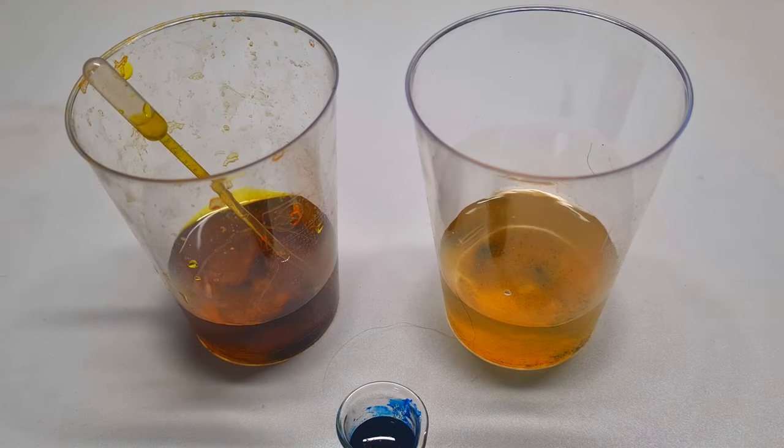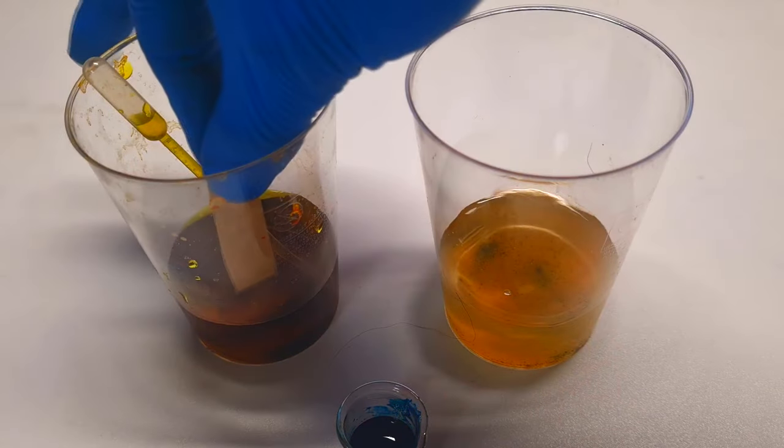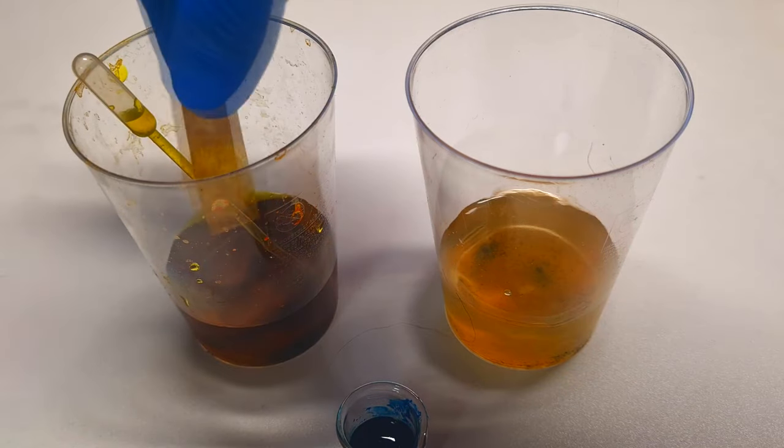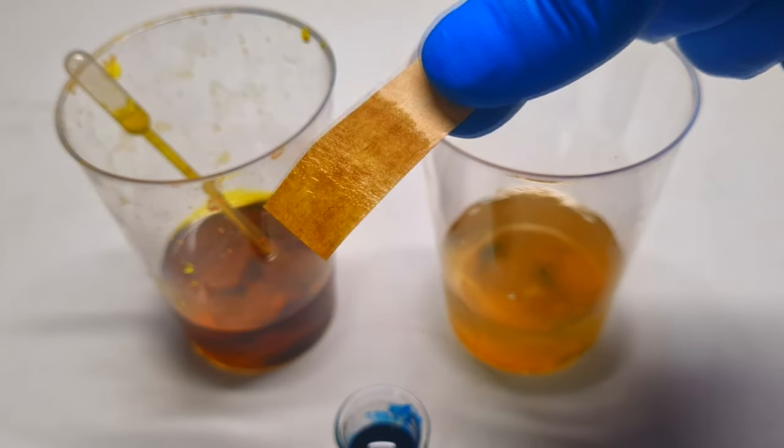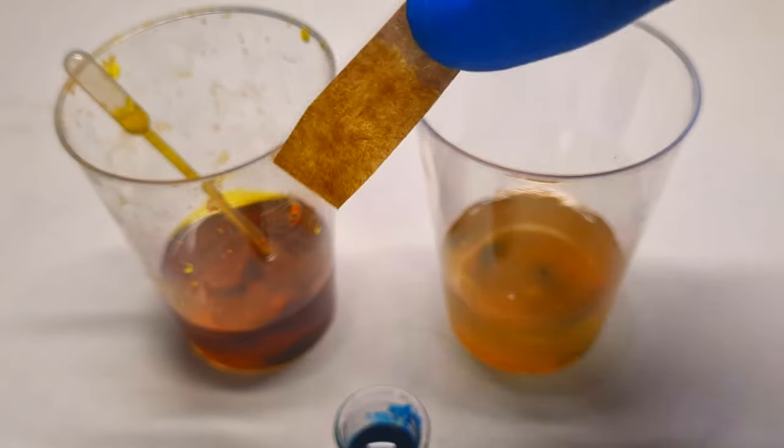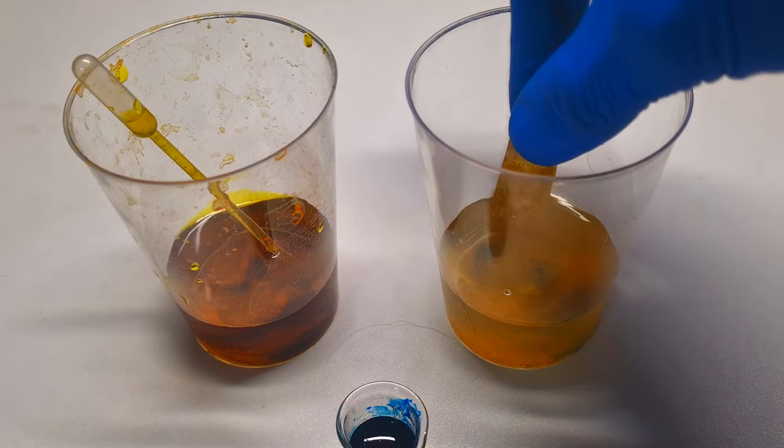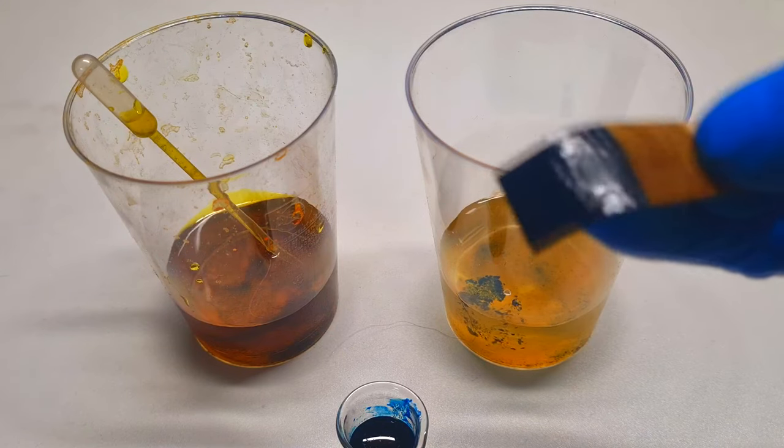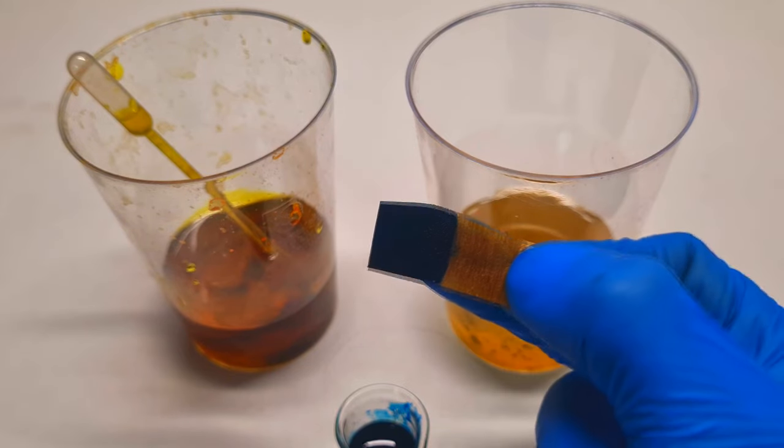you can just simply grab some filter paper and first soak it into the solution of potassium hexacyanoferrate. Then you wait that the paper will be dry, and after drying you will put the paper into this iron sulfate solution. Very nice.